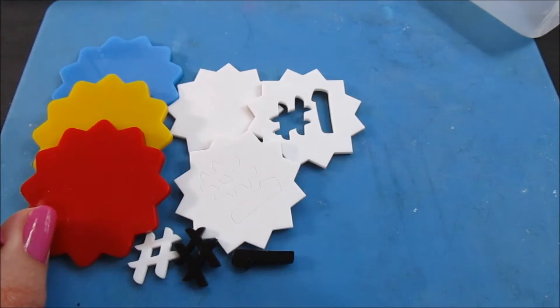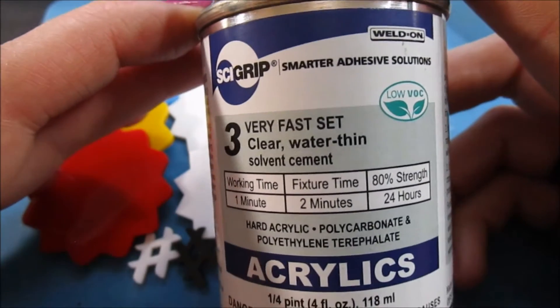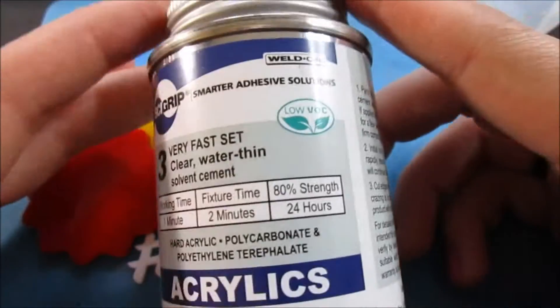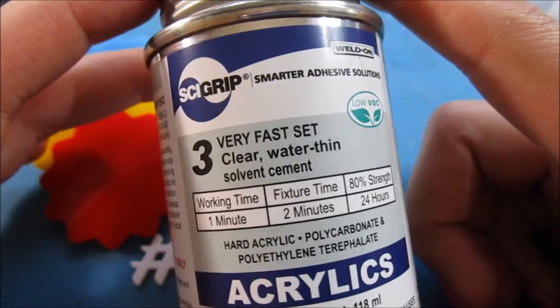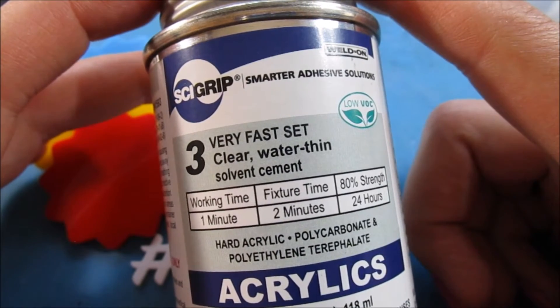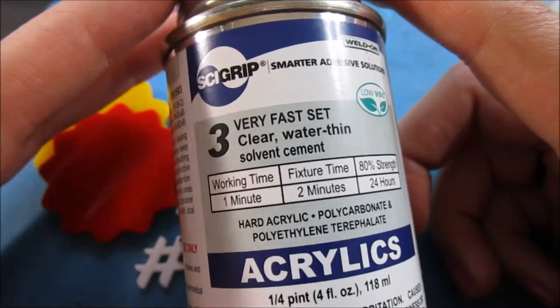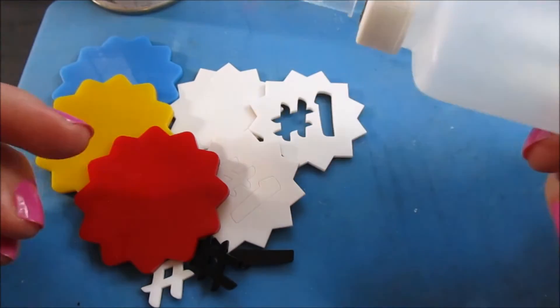Now that I've got everything lasered out, I have three different medals to make and we're going to use three different methods of applying this Scigrip Very Fast Set Water Thin Solvent Cement. It goes on super clear. What it essentially does is kind of melt the plastics and then when they dry they bond together.